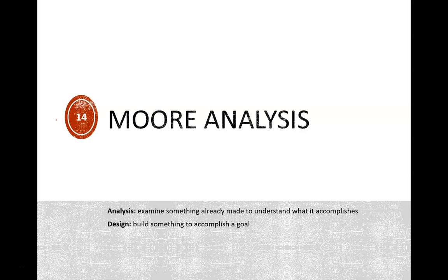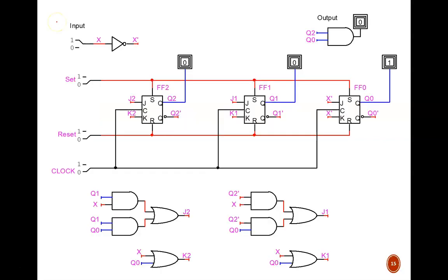We will be going relatively quickly in this video as we perform some more analysis. This is a Moore sequential circuit. How can we tell? It is a sequential circuit because the output signal is a function of memory, which is represented by these flip-flop outputs q2 and q0.